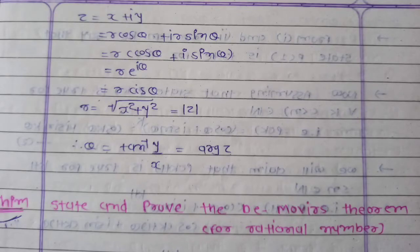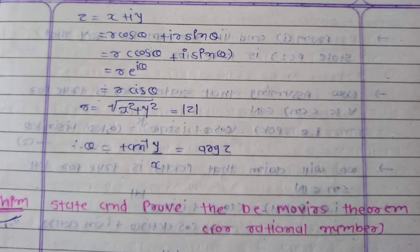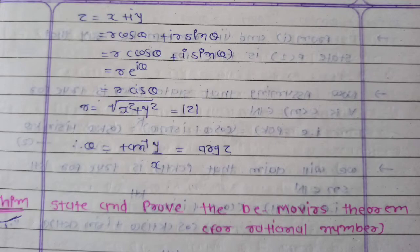For complex number z equal to x plus iY, substituting x equal to R cos theta and y equal to R sin theta, we get z equal to R cos theta plus i R sin theta, which equals R in bracket (cos theta plus i sin theta), or equivalently R times e raised to i theta. Here R is equal to under root of x squared plus y squared, which is equal to modulus of z.